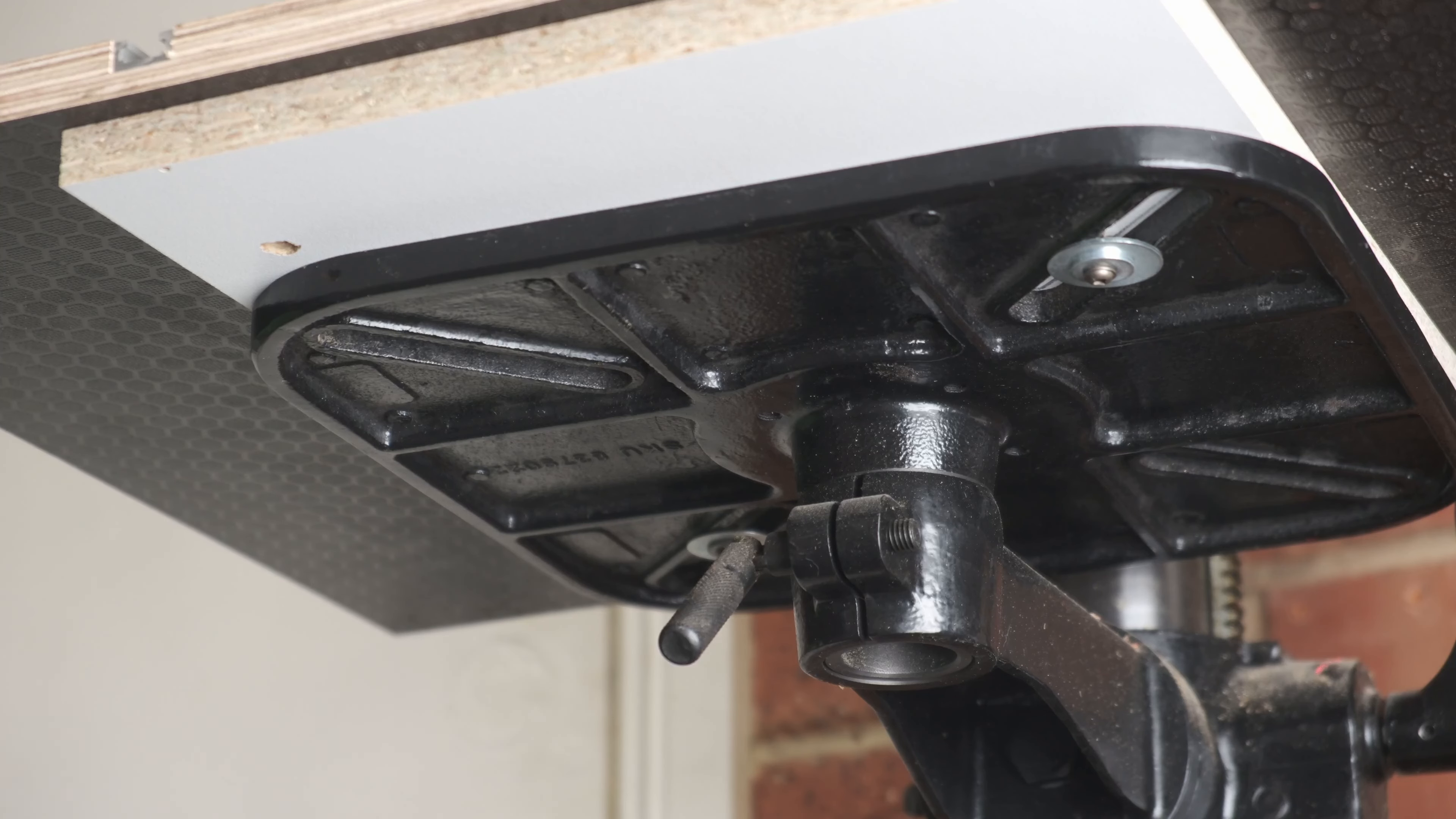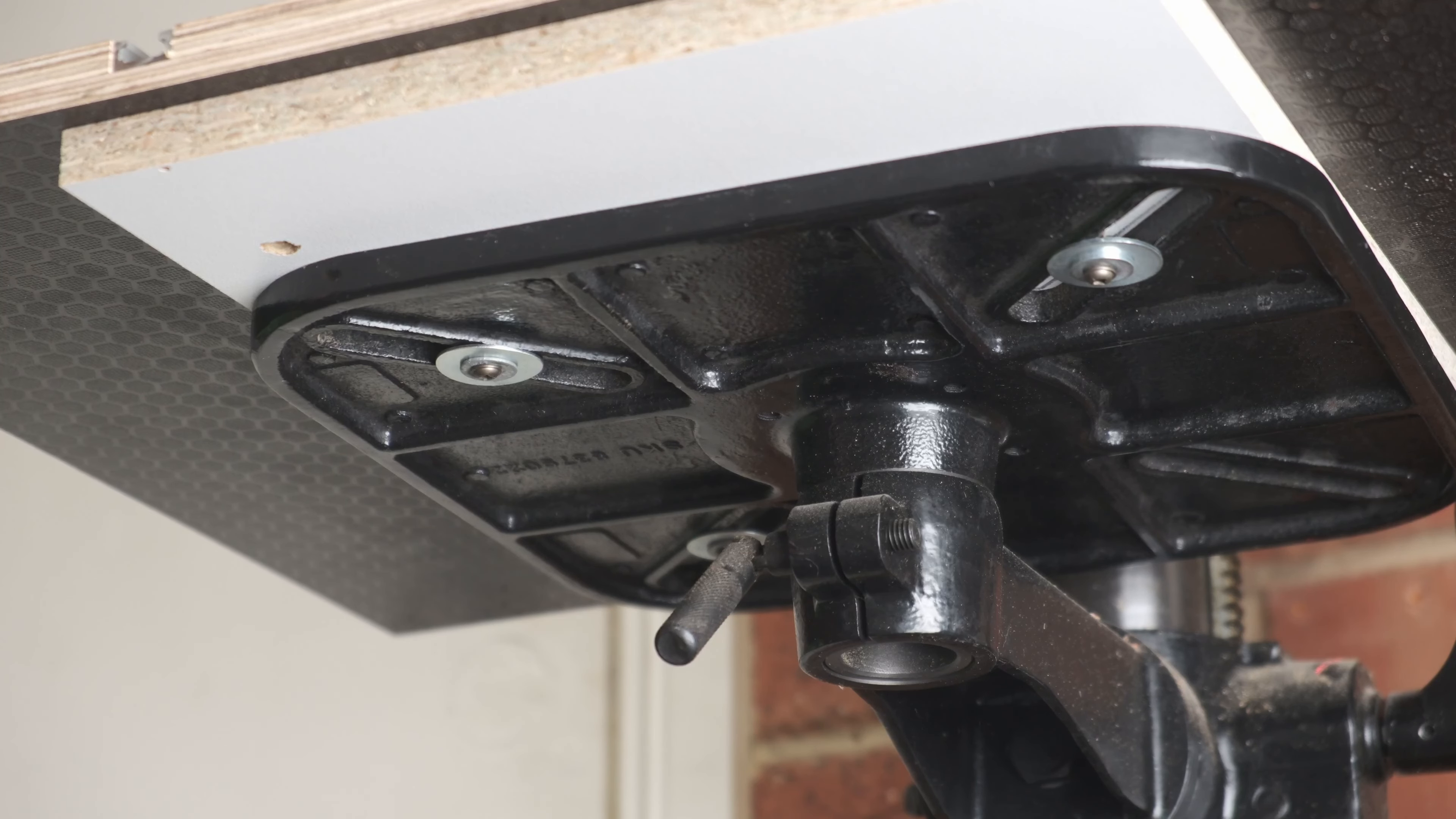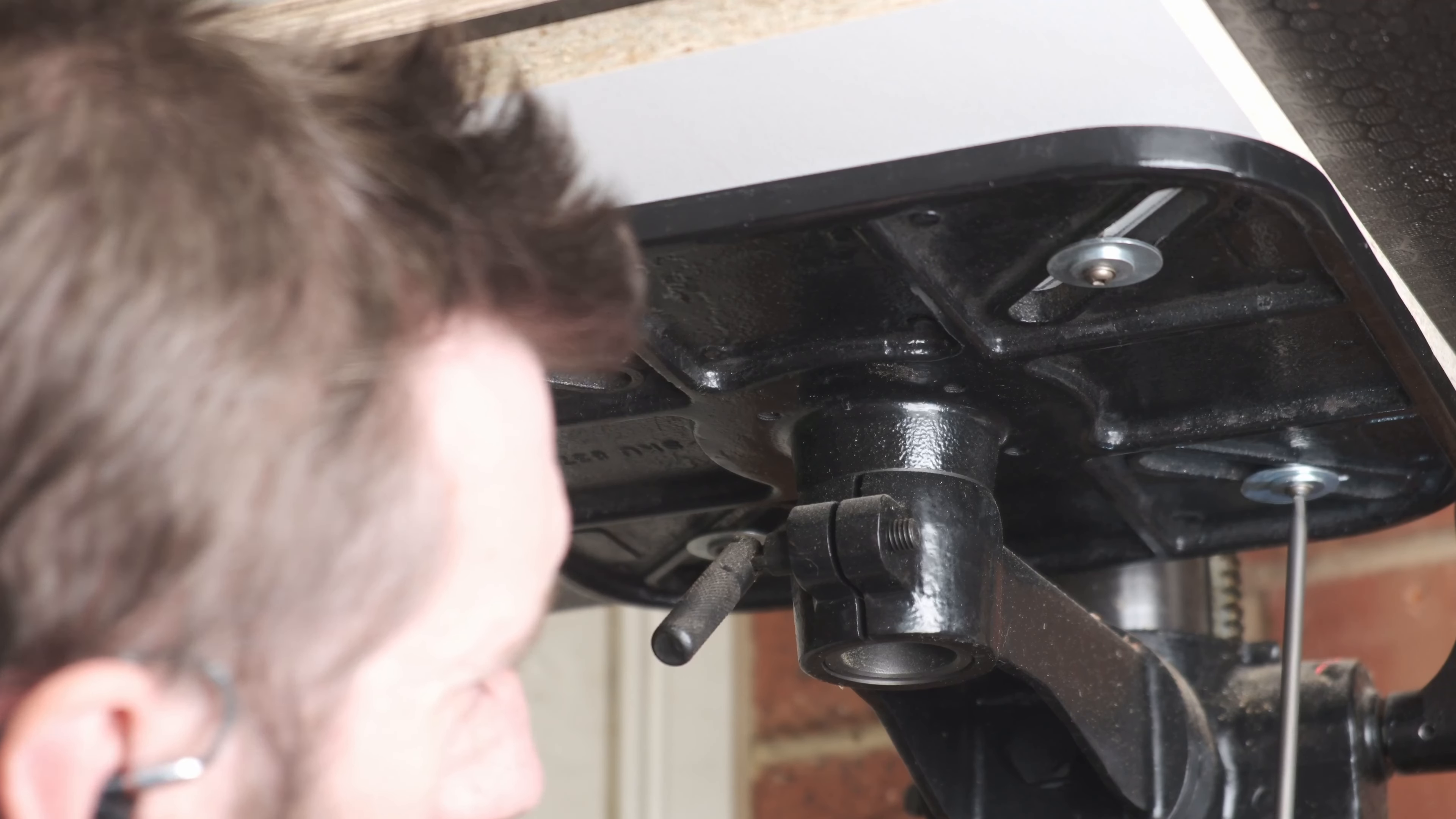A big washer, a small washer and then a regular wood screw and the table is secured to the existing table. If it was something you're going to be removing frequently you could use bolts with threaded inserts or a star knob something like that to clamp it on. But for me I'm just going to be leaving it on my drill press because that's the whole point. The whole convenience is having that always set up.